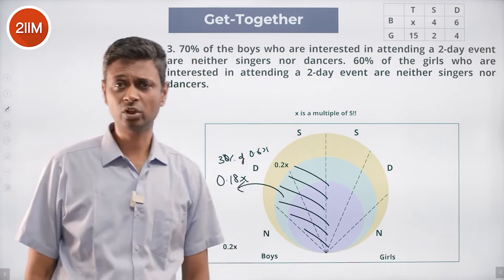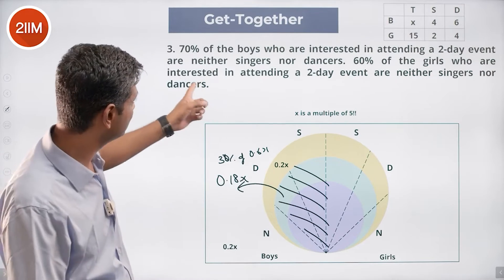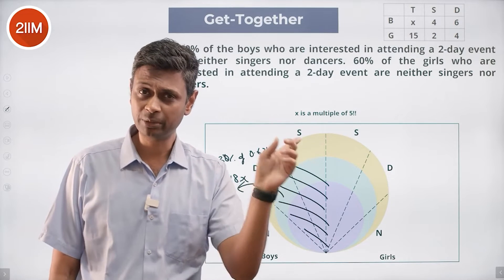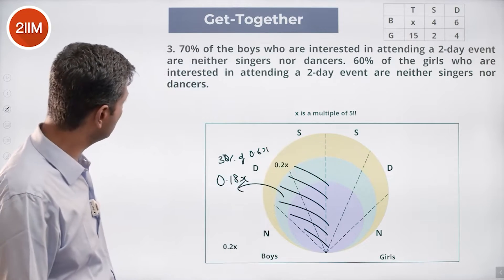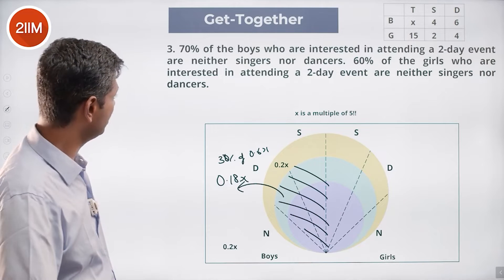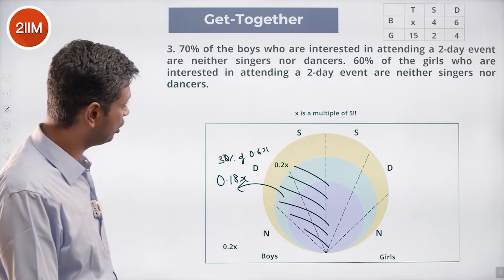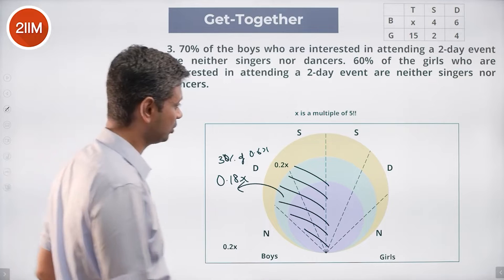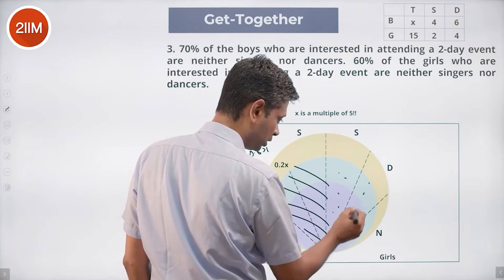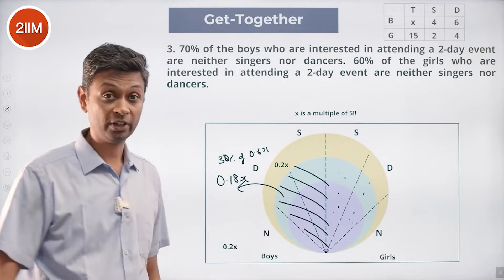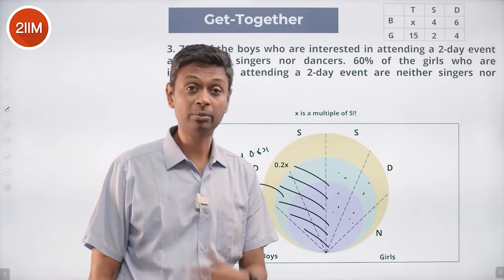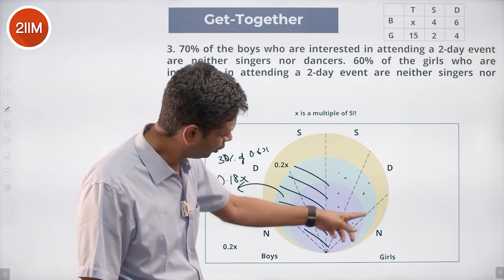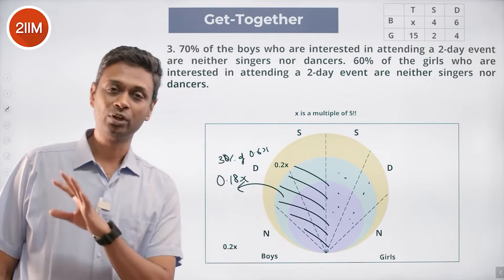We already know that singers and dancers have no overlap — that's been given. 60% of the girls interested in attending a two-day event are neither singers nor dancers, so 40% of them are singers or dancers. 40% is 2/5, so the total number of girls in the two-day event must be a multiple of 5, and the singer-and-dancer combined count must be a multiple of 2.